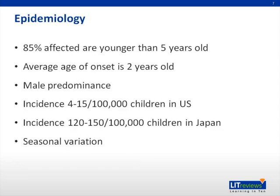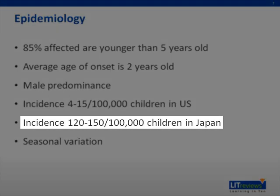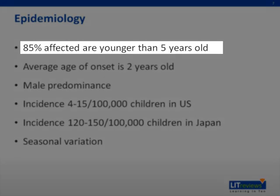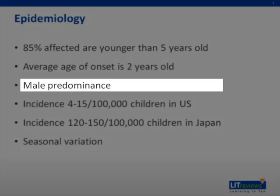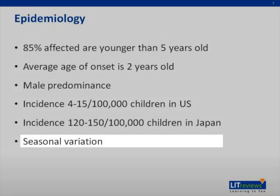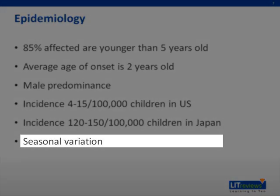KD is seen worldwide, but the highest incidence occurs in children of Asian descent. The incidence of KD is highest in Japan with reported rates of 120 to 150 per 100,000 children per year. KD is an illness of early childhood and 85% of affected patients are younger than five years of age. The average age of onset is approximately two years of age. There is a slight male predominance with an average ratio of 1.5 males affected per one female. There are reports of seasonal variation which vary by geographic area. In Japan, the disease appears to have a bimodal distribution with an increased occurrence in January and the summer months of June and July. In North America, cases tend to cluster between the months of November and May.